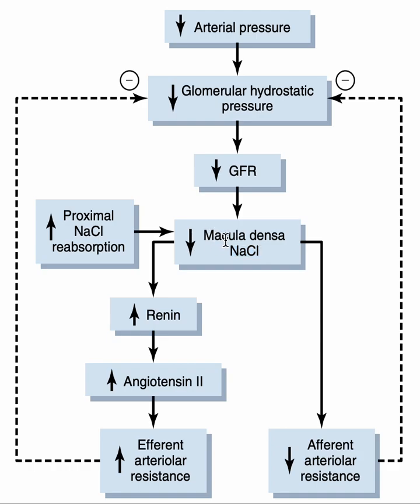First, macula densa will decrease the afferent arteriolar resistance. The blood flow to the glomerulus enters from the afferent arterioles, so if you decrease the resistance in the afferent arterioles, the blood flow to the glomerulus is increased. This increase in blood flow will generate more hydrostatic pressure within the glomerulus and will result in an increase in GFR. This is the first mechanism by which macula densa causes an increase in GFR when arterial pressure is low.